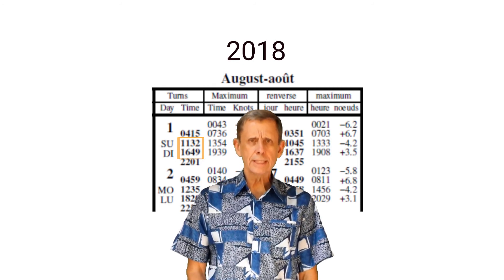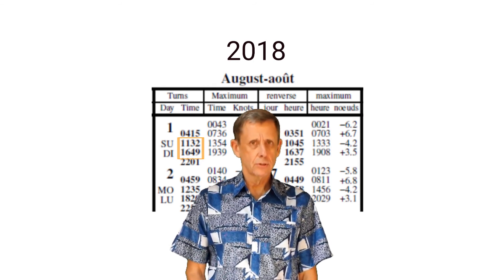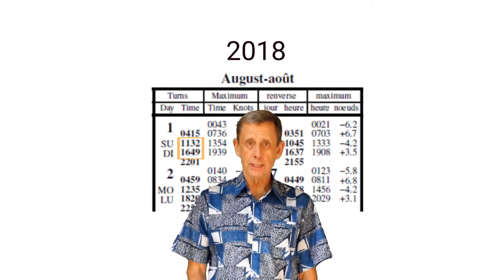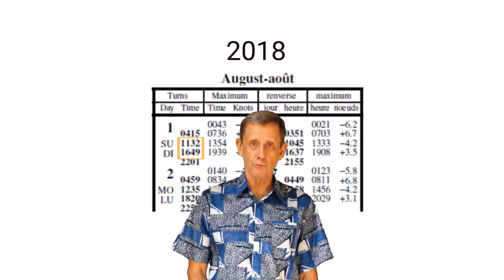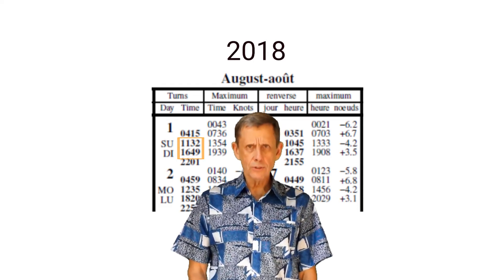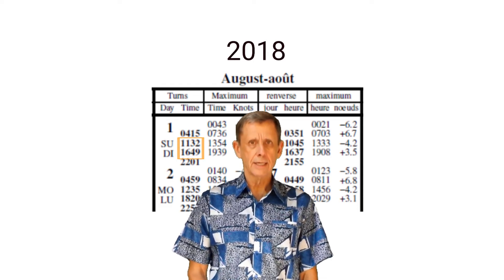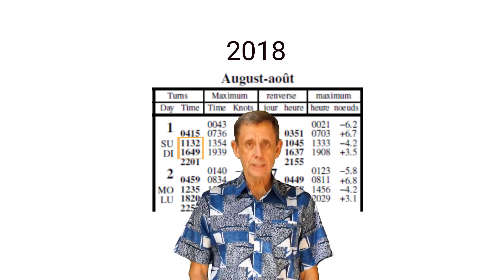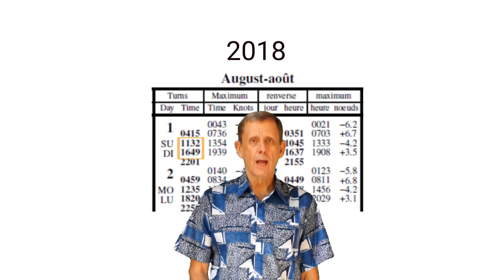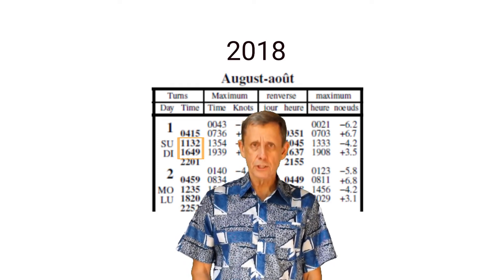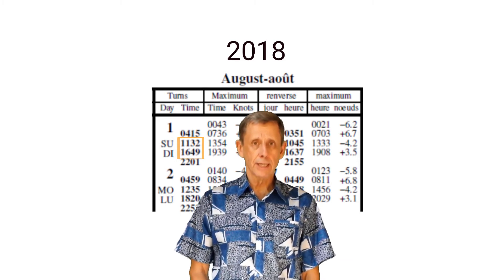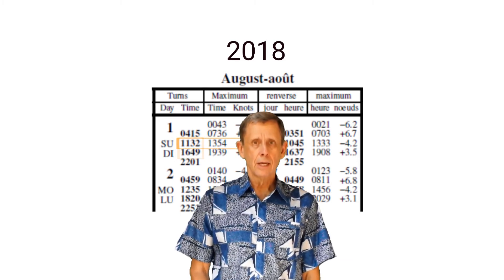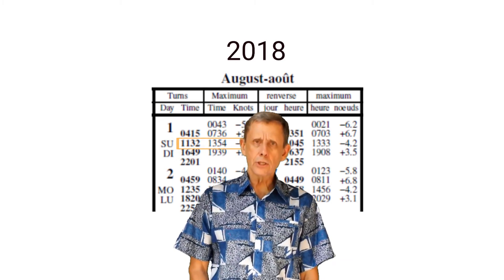When using these tables, you don't really need any more information than this. The tables tell you the safe times to get through a pass, and if you always go through a pass at the time of the turn, you'll always be safe. However, there is additional information provided in these tables, and that information can help you refine your planning. So let's look at what happens to the current after a turn — that's what the next two columns of the tables tell you.